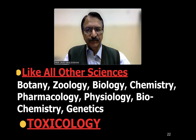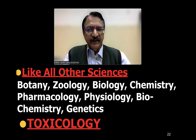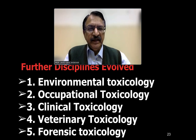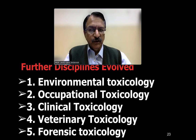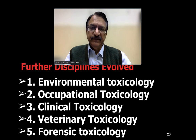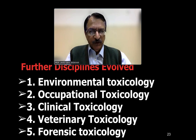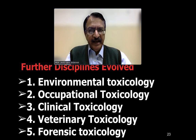This was the base. Like all other sciences, toxicology was recognised as a science and has got many disciplines which evolved later on — like environmental toxicology, occupational toxicology, clinical toxicology, veterinary toxicology, and forensic toxicology. In environmental toxicology, there are many chemicals in the environment which become toxic to humans. Similarly, working in industry and various occupations, there are certain chemicals and poisons which can affect the human body.